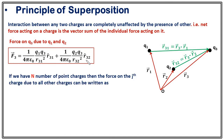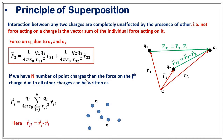In similar fashion, suppose we have n number of point charges and we want to calculate the force on the jth charge. In summation notation, the force on the jth charge is Fj = (Qj / 4πε₀) × Σᵢ (Qi / Rji²) R̂ji, where the sum runs from i = 1 to n, excluding i = j, since a charge cannot exert force on itself. The vector Rji = Rj − Ri.